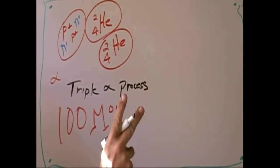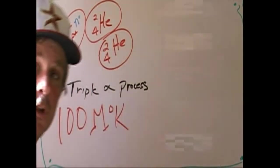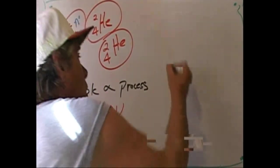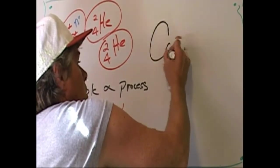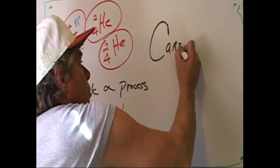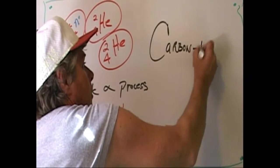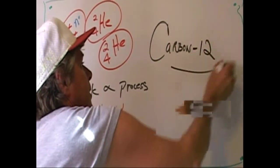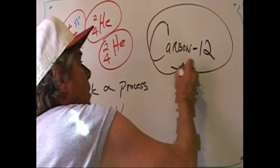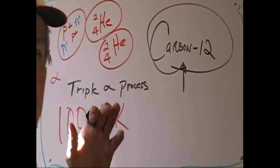Two heliums won't stick together. When three heliums come together, this makes the life essential element. Carbon. Carbon-12. This is where life is now able to start coming and form.